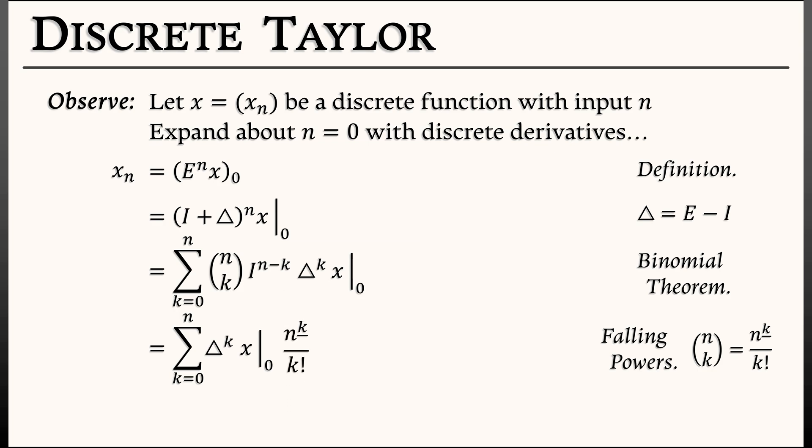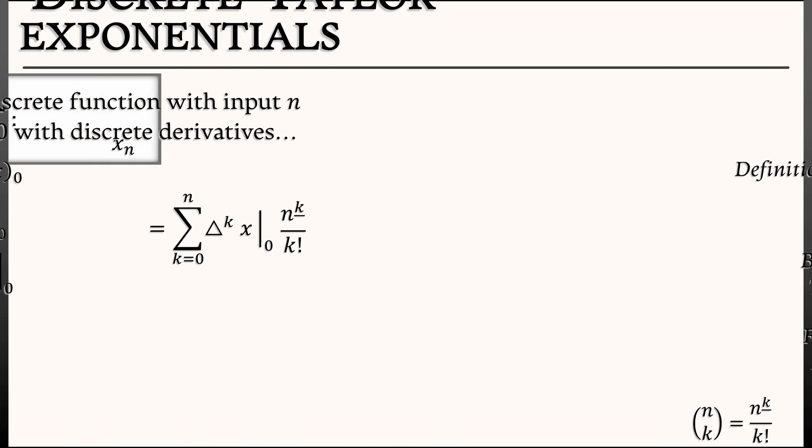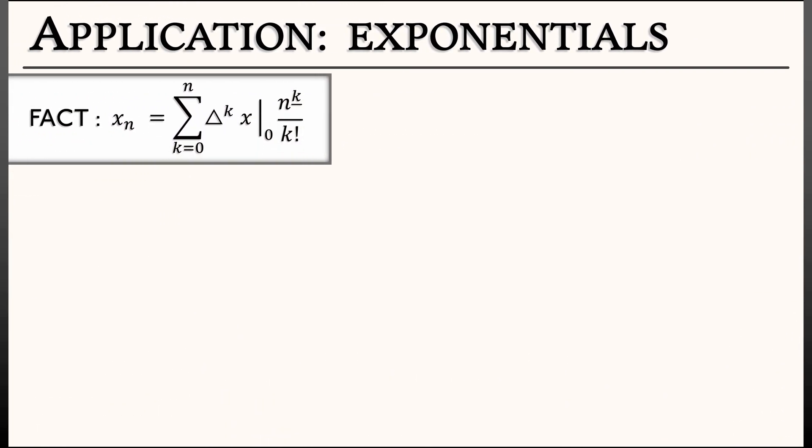That's really looking exactly like a Taylor expansion, but now it's using all the tools of discrete calculus. Forward differences, falling powers, all that good stuff. That's kind of cool. That's kind of a fun fact. But what could we do with that?